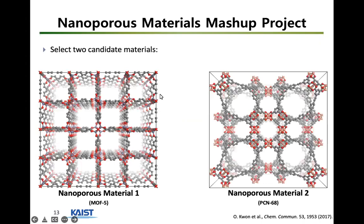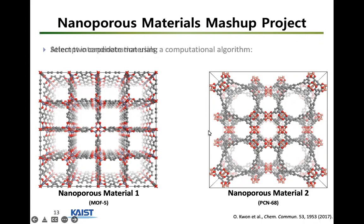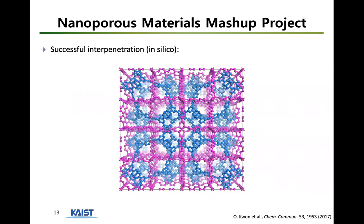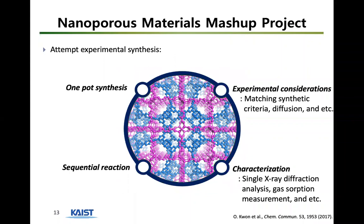Similarly, what we did was take a large pool of experimentally synthesized porous materials — for example material A and material B — and tried to overlap them on top of one another. Usually this leads to many collisions between atoms so you don't get something thermodynamically stable. But if we have millions of materials and do all these pairwise pairings, we might stumble onto a pair that fits very well and would be thermodynamically stable. The algorithm was to identify these mashed-up materials — called hetero-interpenetrated structures — and see whether we could synthesize them.